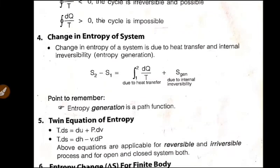So next one is change in entropy of the system. In the formula, S2 minus S1 is equal to integral 1 to 2 DQ by T plus S generation due to internal irreversibility.